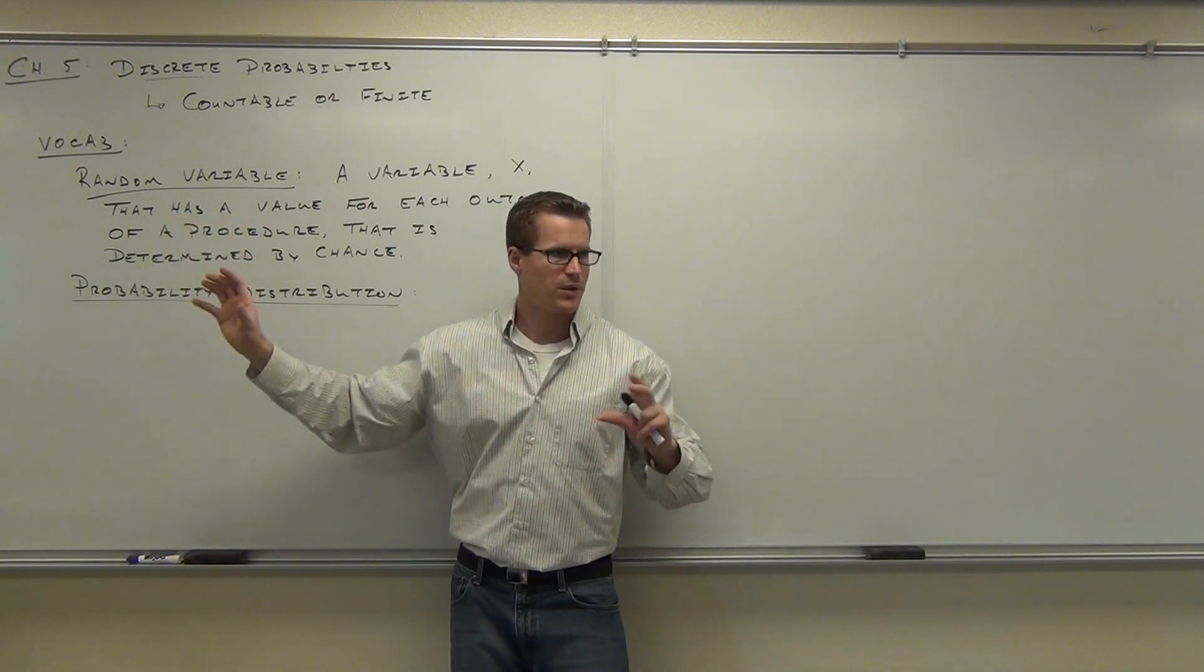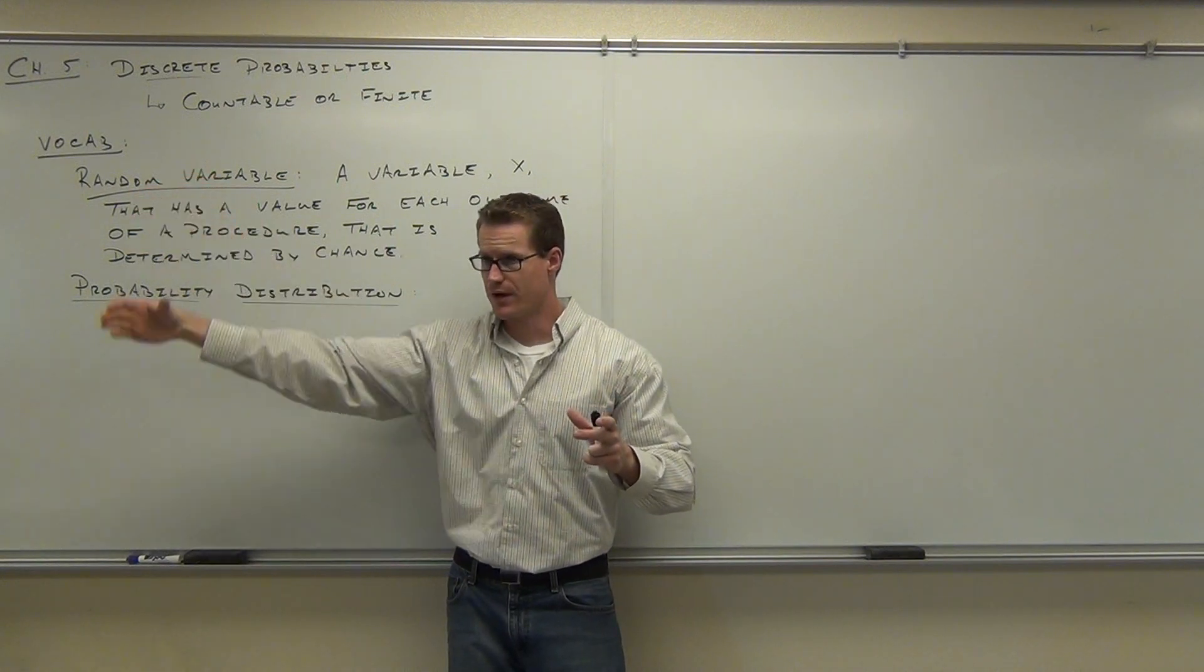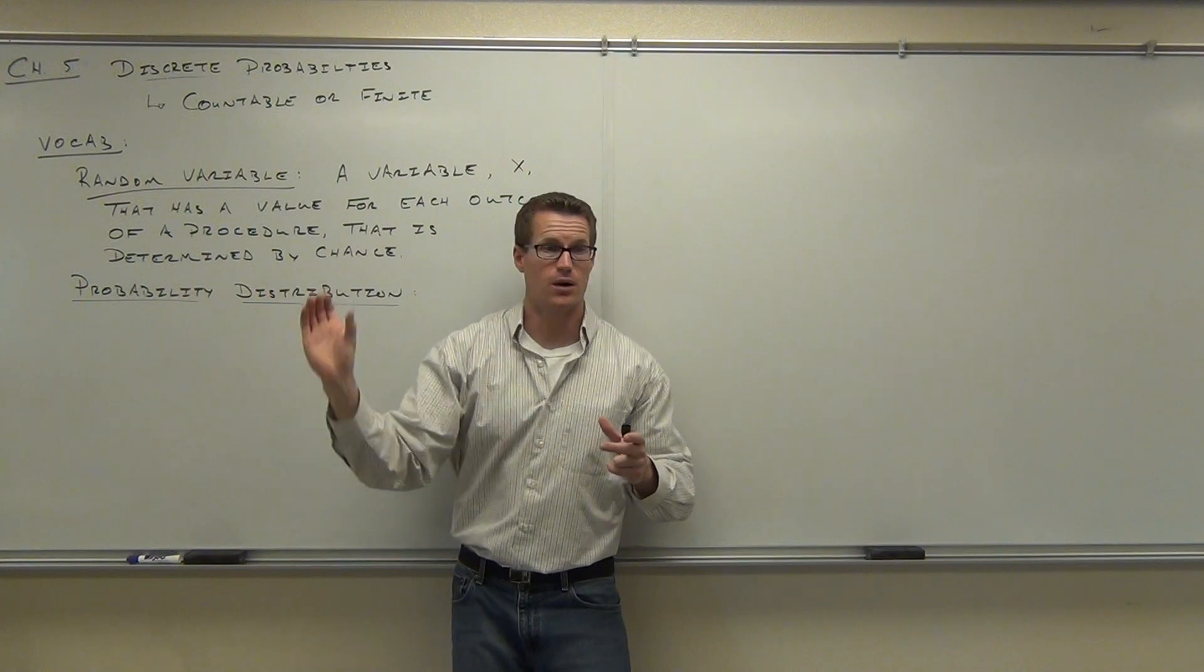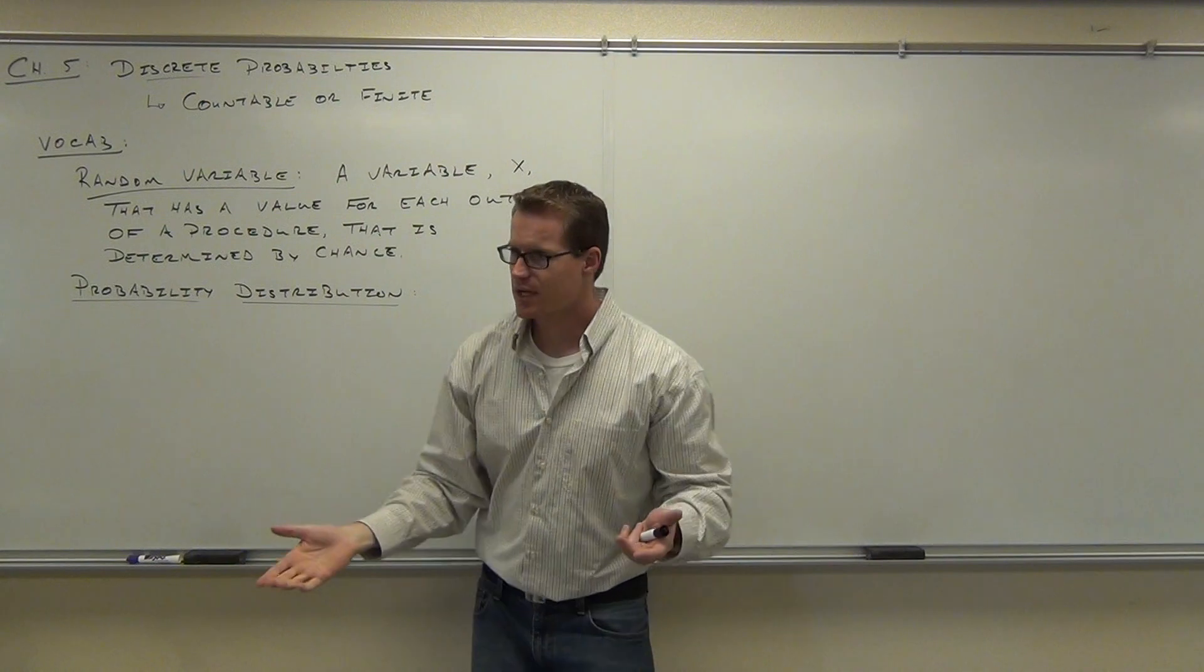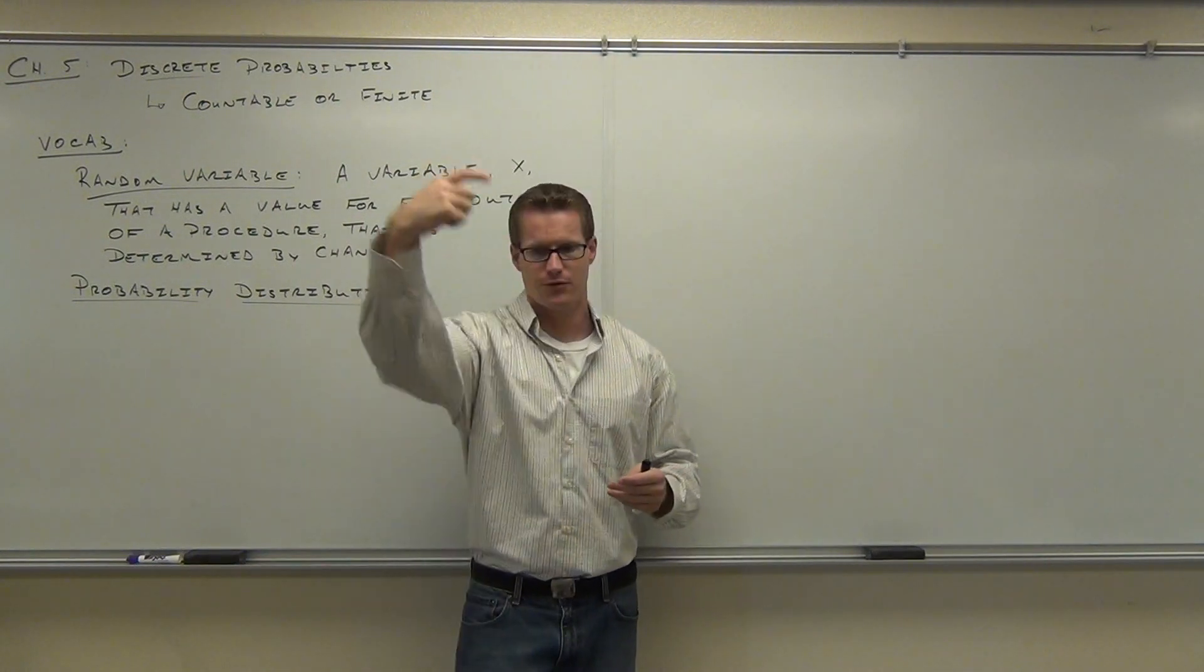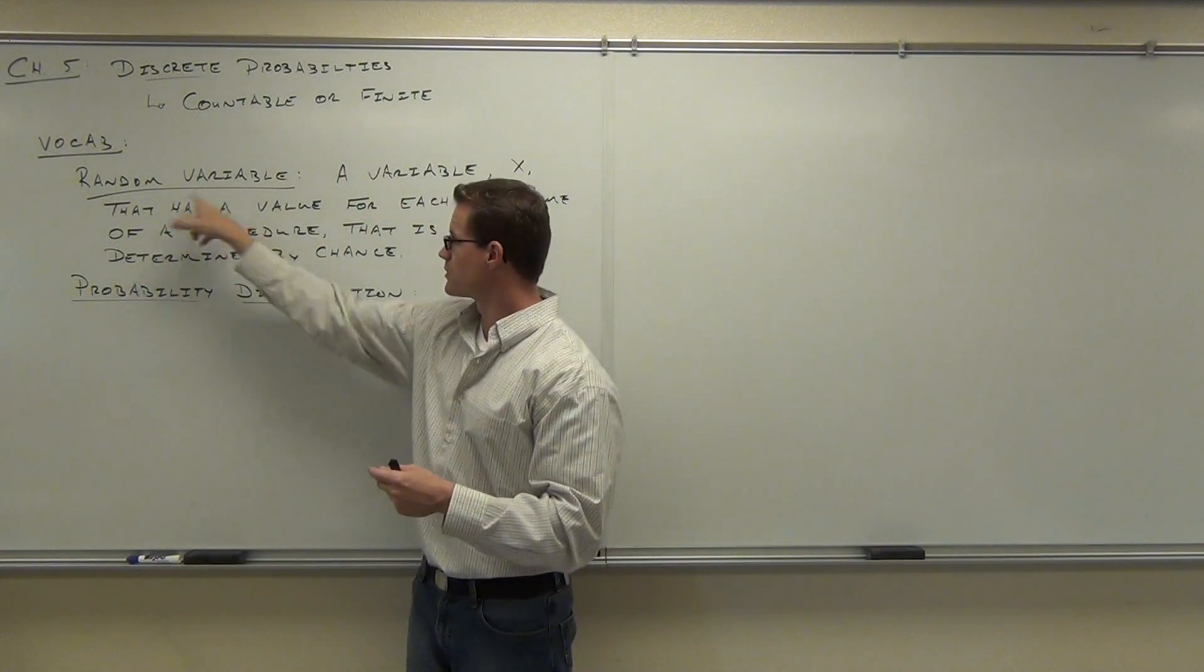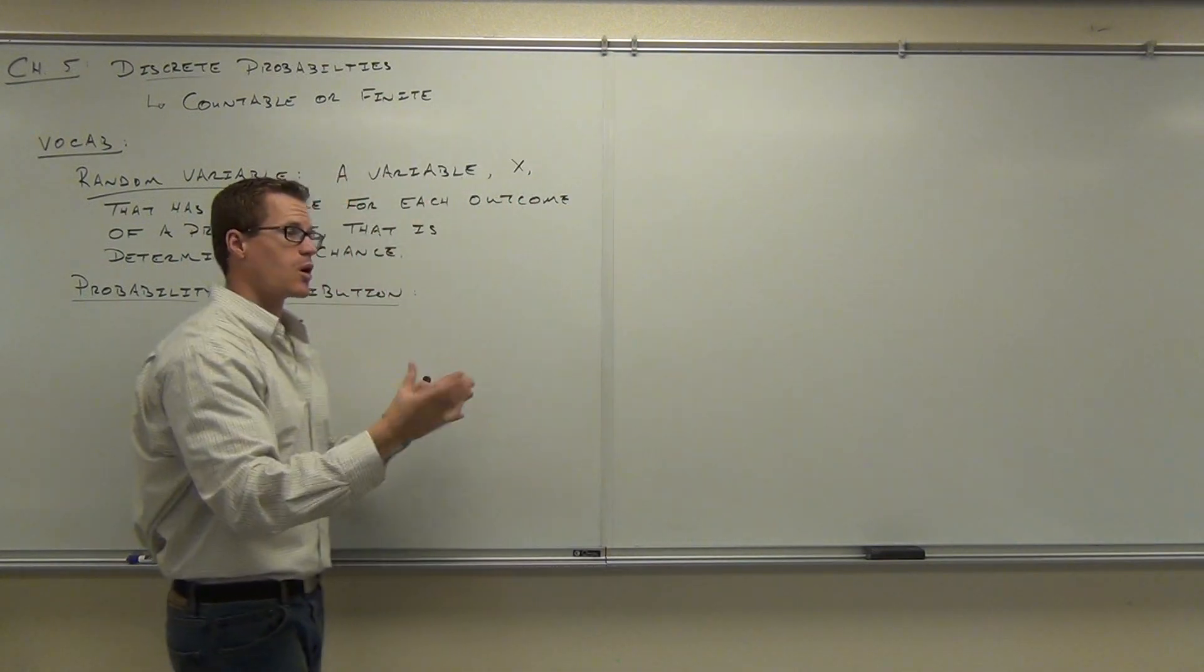So a probability distribution is based on the outcomes or the values that my random variable can take and the probabilities for each of those outcomes, or each of those values that my random variable can take. So it looks just like a frequency distribution. Just like it. We're going to have a table, like a t-chart. We're going to have some columns. On the left-hand side, we'll have values, our random variable values. On the right-hand side, we'll have the probabilities. And that's a probability distribution.